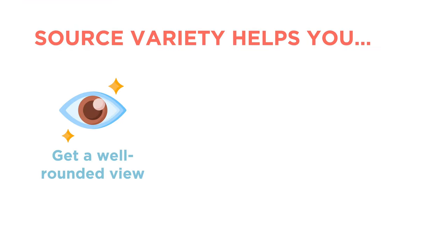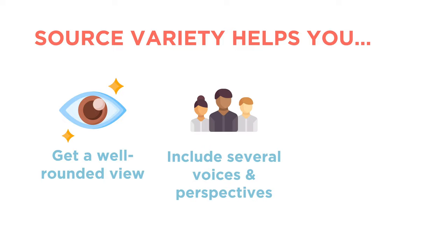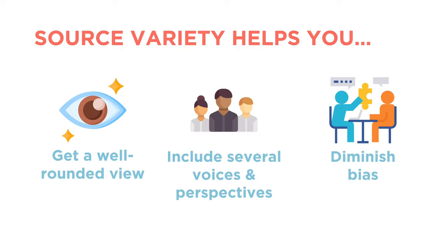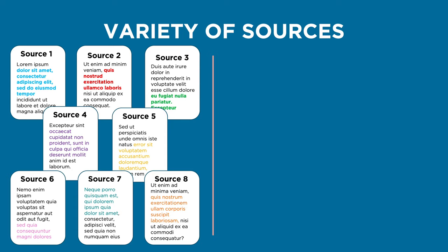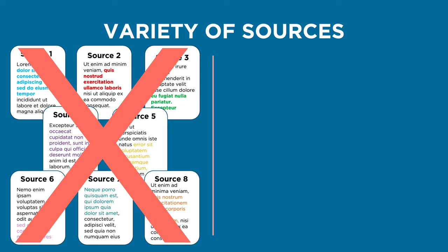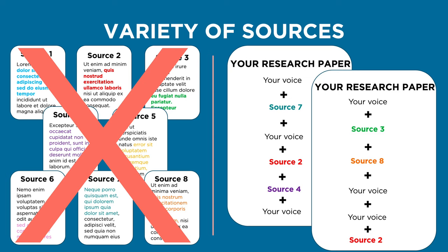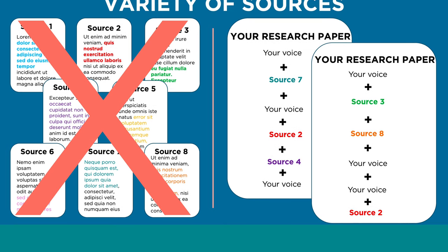When you're doing research, it's important to use a variety of sources so you can get a well-rounded view, include several voices and perspectives, and diminish bias. Using a variety of sources doesn't necessarily mean using every type of source every time. It means getting a well-rounded view with different perspectives represented.